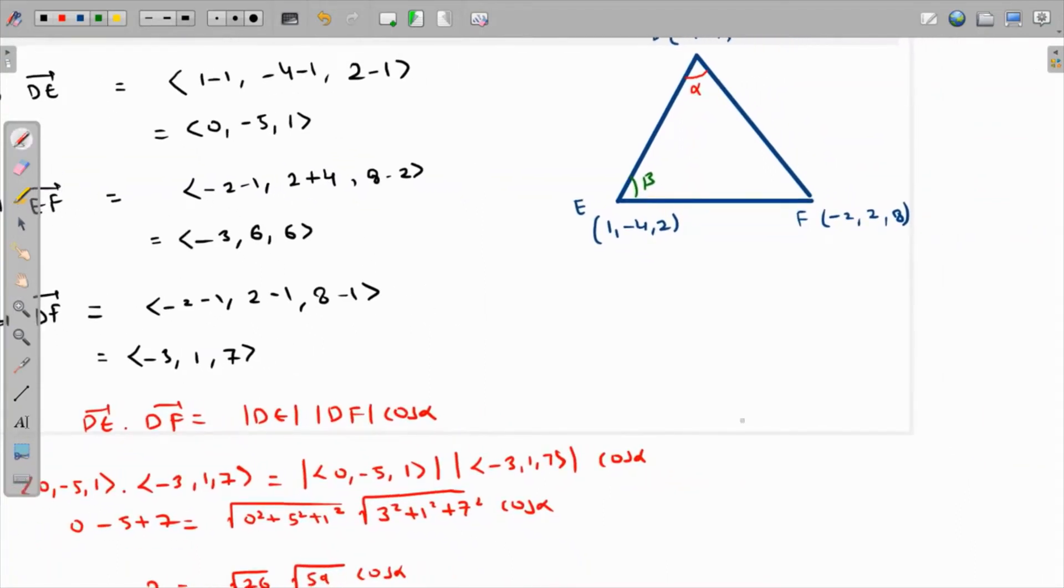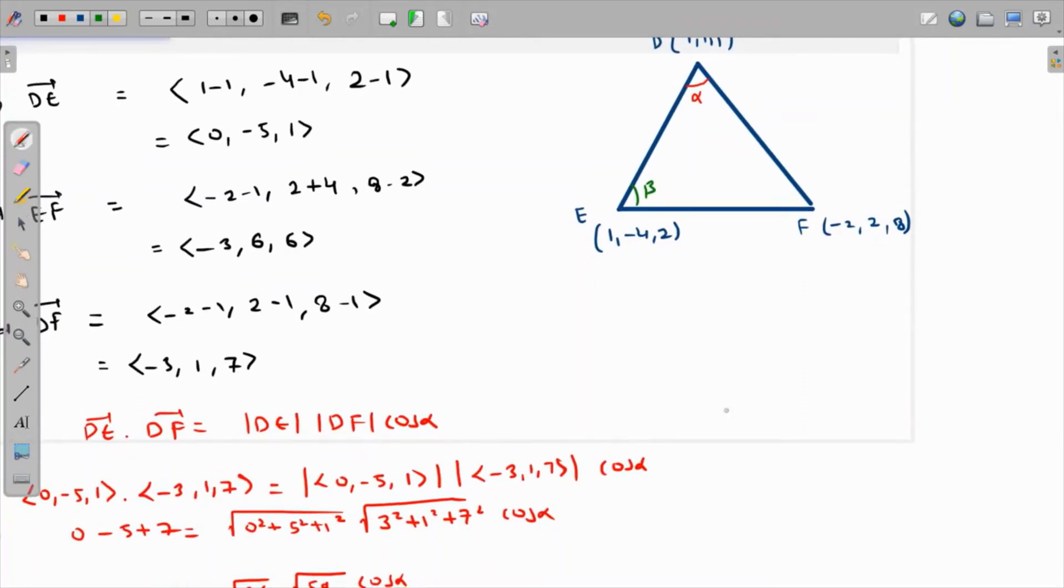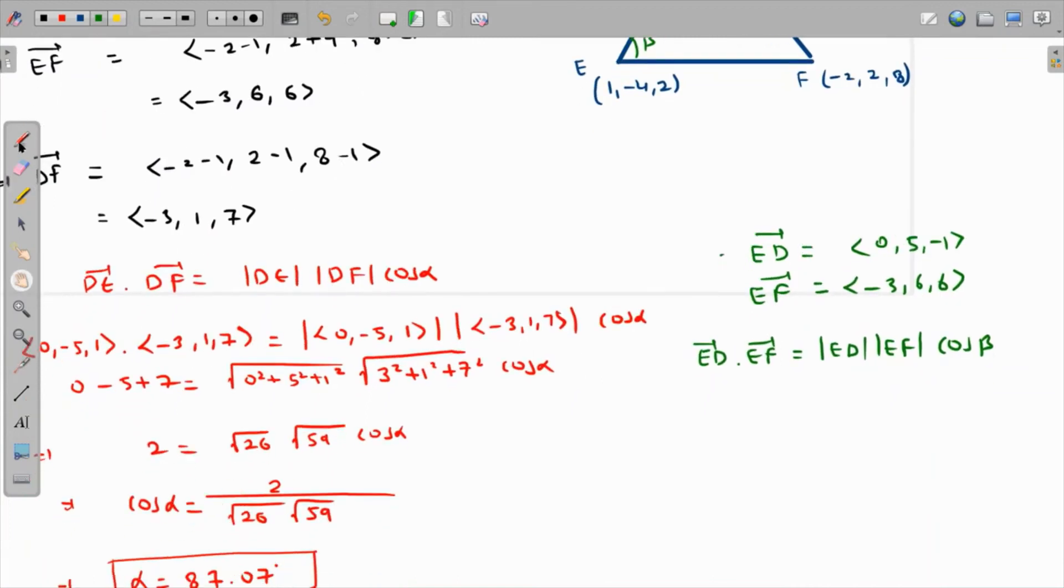Now for beta, I'm going to write vector ED. We already have DE, but ED is exactly opposite, so for ED I'm just going to change all the signs, so that's <0, 5, -1>. And we have EF as <-3, 6, 6>. Now ED times EF equals magnitude of ED times magnitude of EF times cosine of beta.